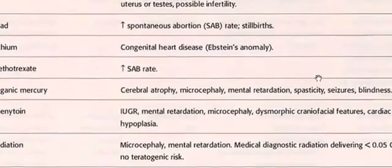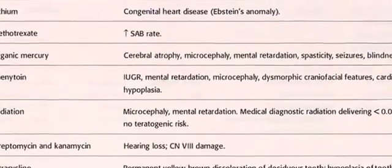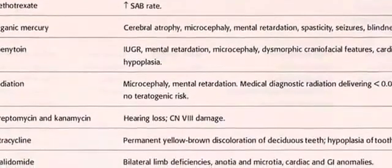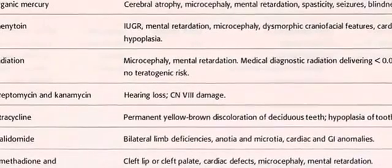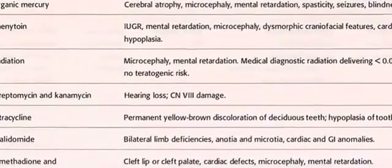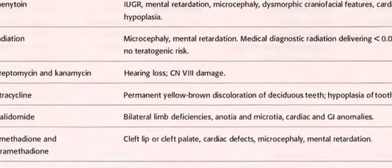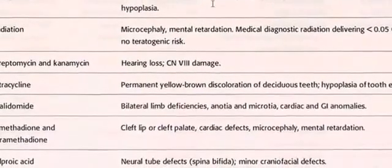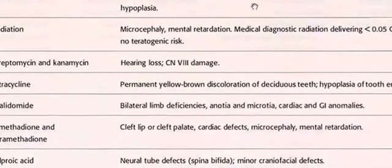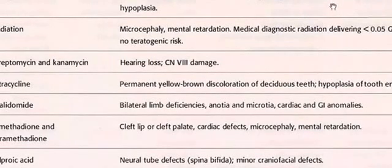Organic mercury: cerebral atrophy, microcephaly, mental retardation, spasticity, seizures, blindness. Phenytoin: intrauterine growth restriction, mental retardation, microcephaly, dysmorphic craniofacial features.